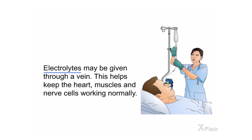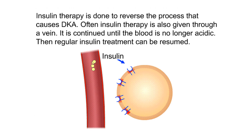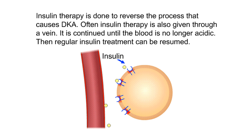Electrolytes may be given through a vein to help keep the heart, muscles, and nerve cells working normally. Insulin therapy is done to reverse the process that causes DKA. Often insulin therapy is also given through a vein and is continued until the blood is no longer acidic, after which regular insulin treatment can be resumed.